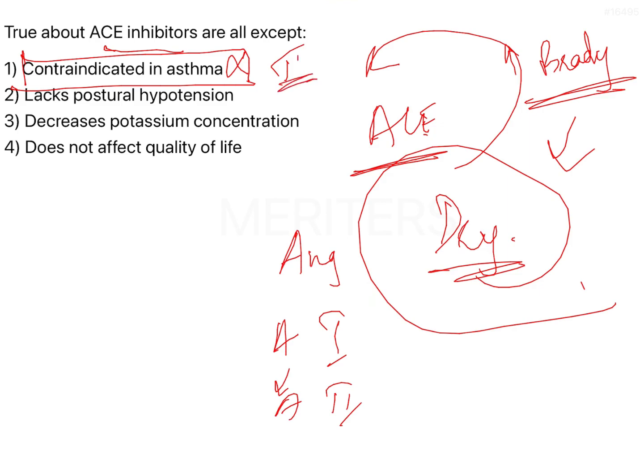Second is less postural hypotension. This is again a true statement. Postural hypotension is a very common side effect of alpha blockers, especially phenoxybenzamine and yohimbine. Alpha 1 as well as alpha 2 blockers very typically cause postural hypotension, which is the most common side effect of these medicines. So this is also a true statement.